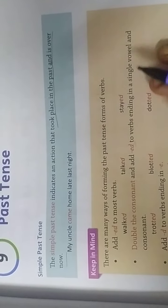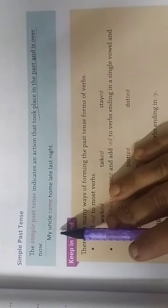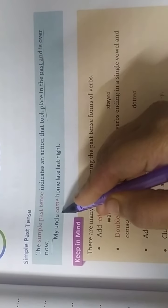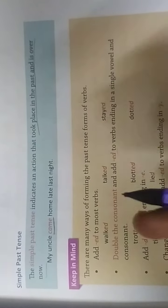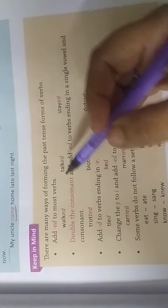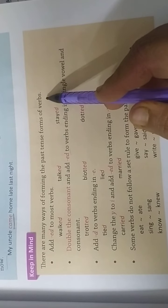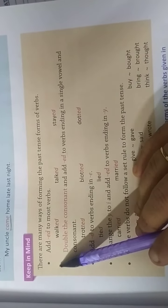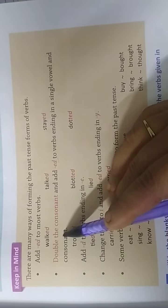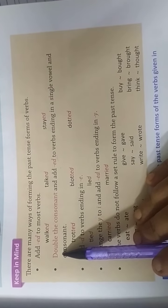The action has already happened and is now complete. For example, 'My uncle came home last night' — here 'came' is past tense. Keep in mind there are many ways of forming the past tense. For most verbs we add -ed: fogged, togged, stayed, and so on.